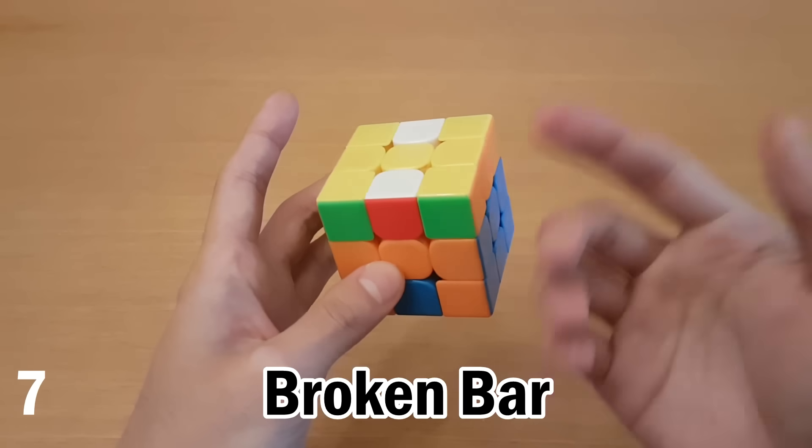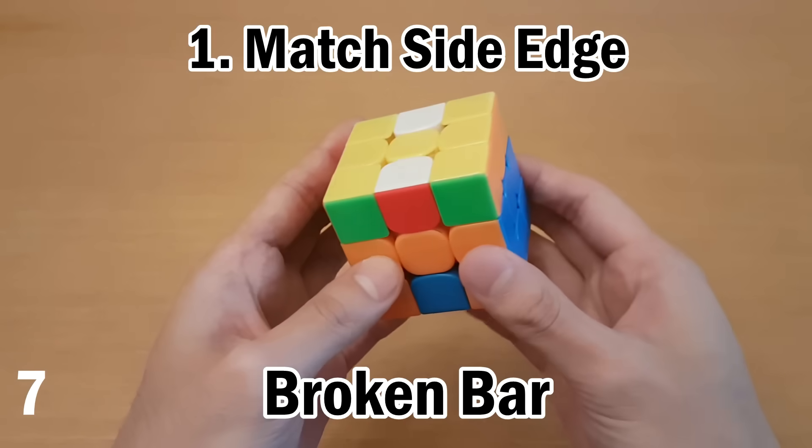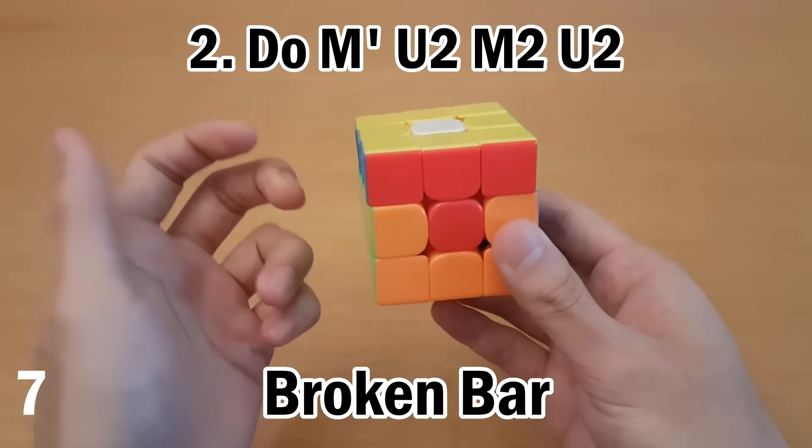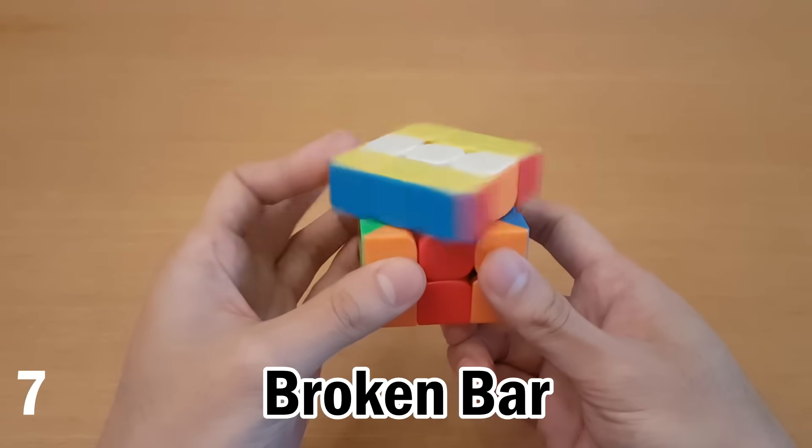Now in this case, since it's a broken bar case, I'm going to follow the exact same steps. So I'm going to do M2 and here's the orange. There's the orange. I'll try to match them. And then I will do M' U2, M2 U2. Now sometimes you'll have to do a little bit more afterwards, but that's the general idea.